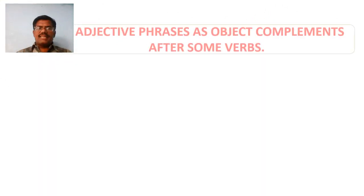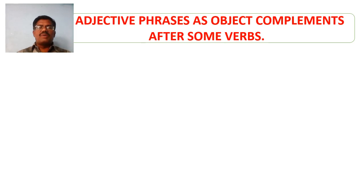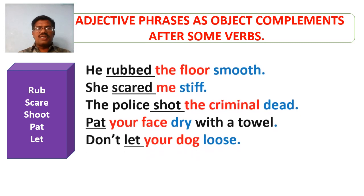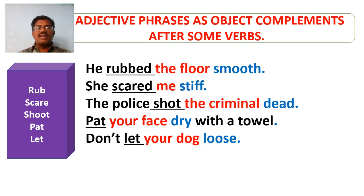Here is another list of verbs with which there is a possibility of using adjective phrases as object complements. They include: drop, chuck, shoot, pat, let. These verbs are used in sentences and are underlined. The objects are marked in red ink and the adjective phrases used as object complements are marked in blue ink. They include: smooth, stiff, dead, dry, loose.